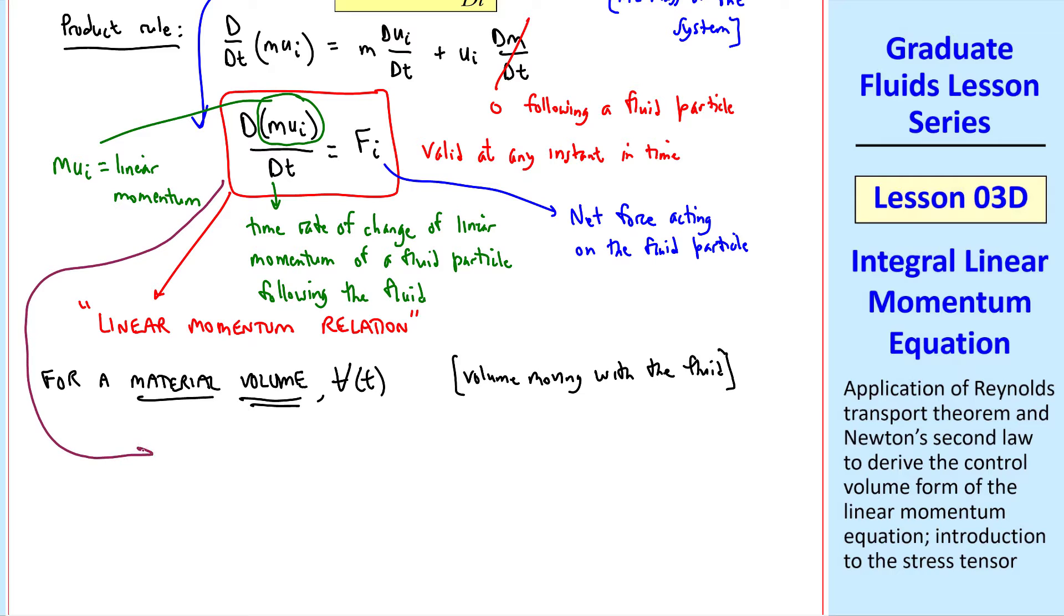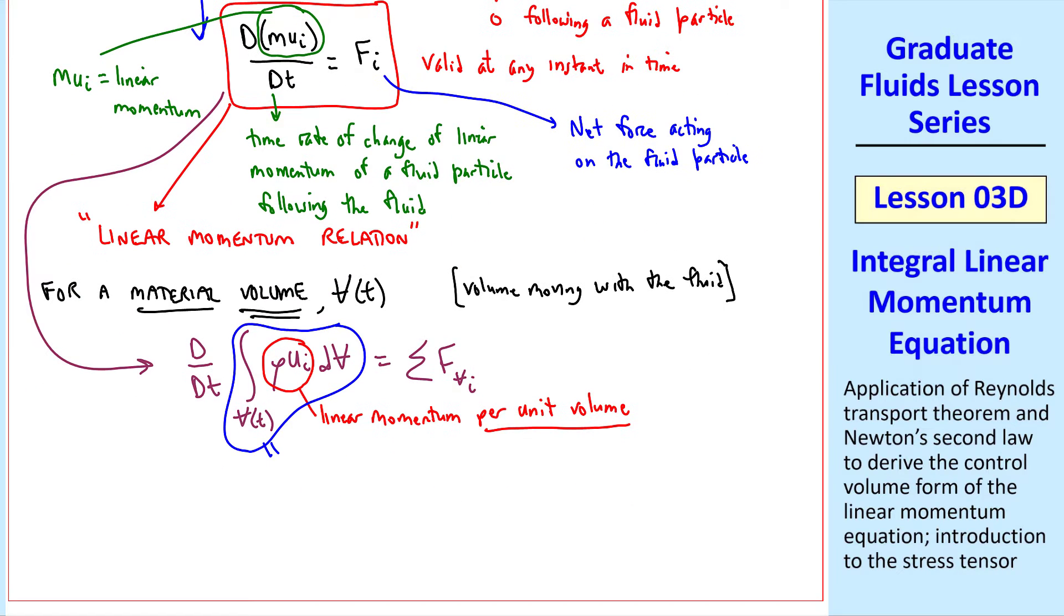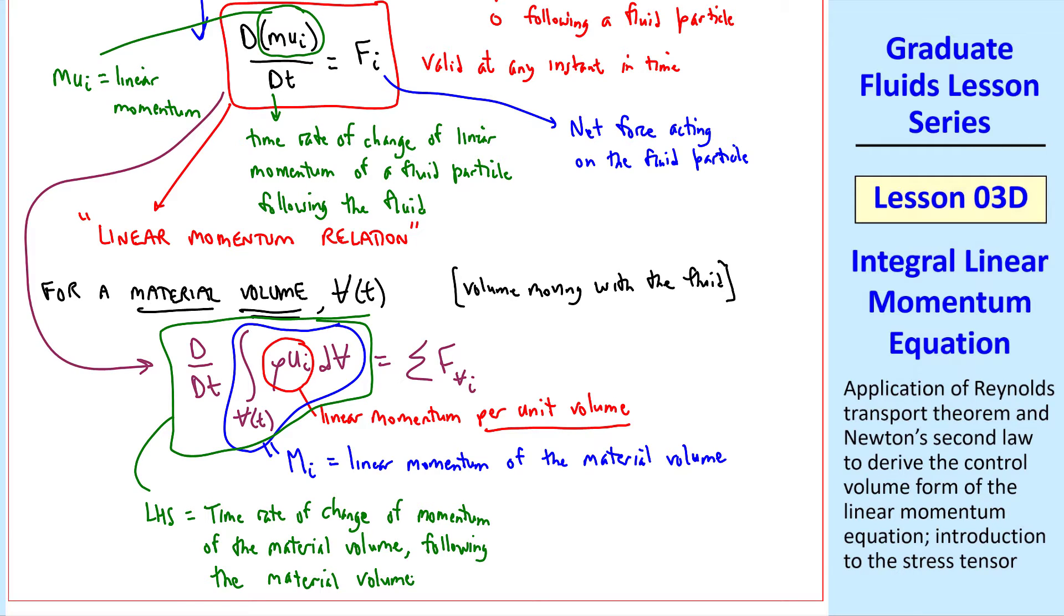Our linear momentum equation can be written as d/dt of the volume integral rho ui dv equals sigma fvi, where rho ui is the linear momentum per unit volume. It's a vector, of course, because momentum is a vector, and this is in tensor notation. Some textbooks call this capital MI, the linear momentum of the material volume, where we've integrated over the material volume. The left-hand side is the time rate of change of momentum of the material volume following the material volume. The right-hand side is the sum of all forces acting on the material volume.